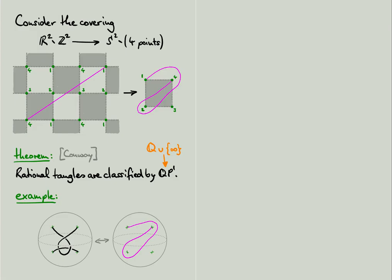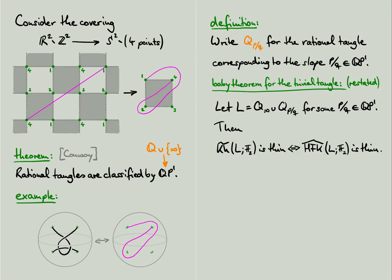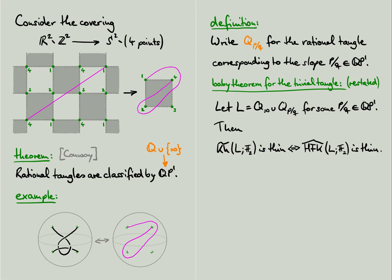We now introduce the following notation. We write Q sub p over q for the rational tangle corresponding to the slope p over q. And we can now restate the baby theorem for the trivial tangle as follows. If L is the union of the trivial tangle, i.e. the rational tangle of slope infinity, and some arbitrary rational tangle of slope p over q, then the Khovanov homology of L is thin if and only if its knot-Floer homology is thin.